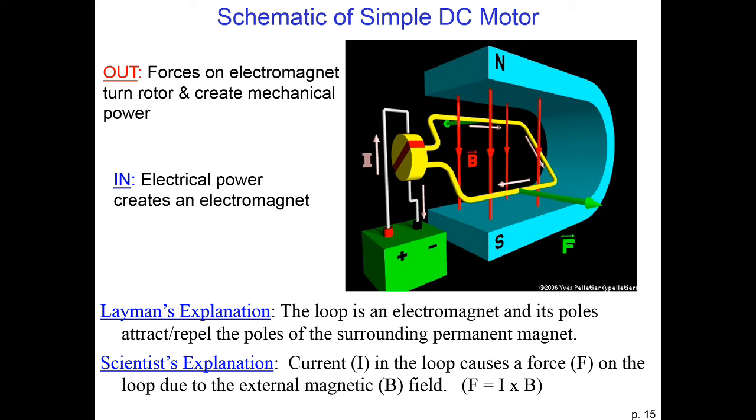However, the moment it gets there, we switch the current, and then now the north pole and south pole flip. So, it keeps turning, sort of forever trying to bring the north magnetic pole of the electromagnet to the south pole of the permanent magnet, but it keeps switching before it can get there.